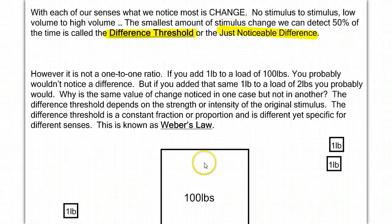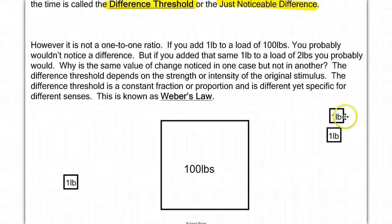What's interesting about this concept is it doesn't work on a one-to-one ratio. In other words, if you were carrying 100 pounds and I added 1 pound to it, you probably wouldn't notice a difference. But if you were carrying 1 pound and I added 1 pound to it, you would probably recognize it because we've increased the amount by 100%, where over here we only increased the amount by 1%. This ability to recognize differences in stimulus is called the just noticeable difference. The answer is a very specific ratio, and it's based on a concept called Weber's Law. It's a ratio between the new stimulus and the original stimulus.